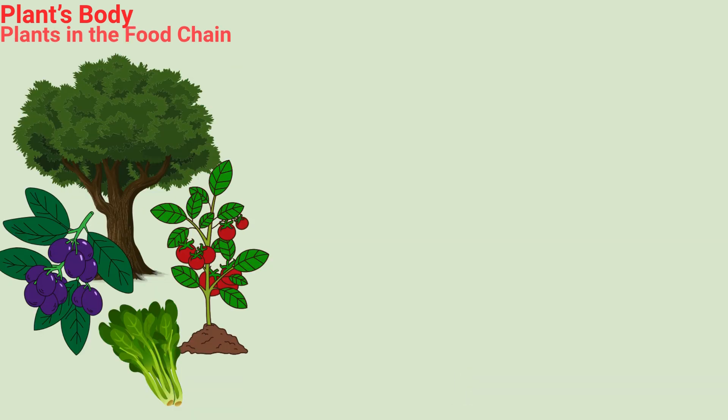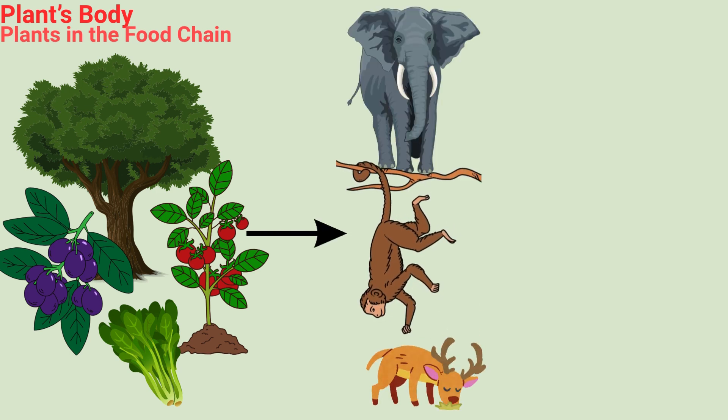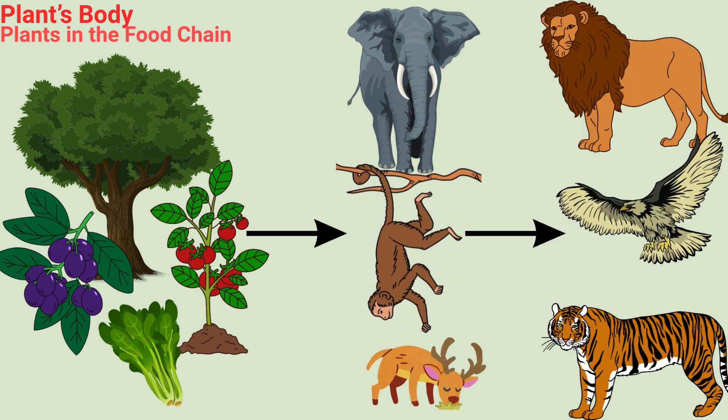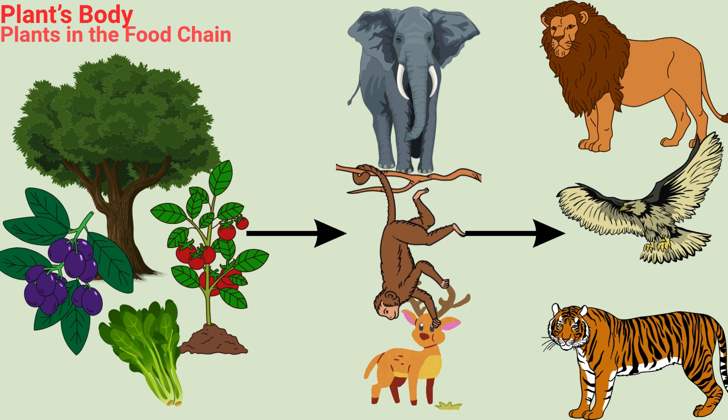Plants are called producers in the food chain. Plants make food. Animals eat plants. Bigger animals eat plant-eating animals. Without plants, there would be no food. They are the first and most important part of the food chain.